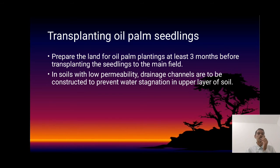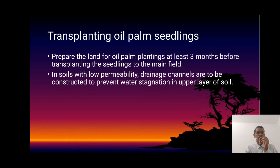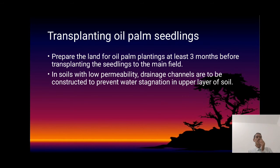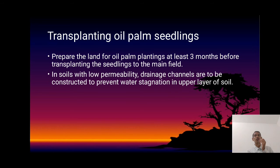The last topic is transplanting oil palm seedlings. First, prepare the land for oil palm planting at least 3 months before transplanting the seedlings to the main field. If the soil drainage is low, drainage must be controlled to prevent waterlogging in the upper layer of the soil. Transplanting needs to be done after at least 3 months of preparation before moving the seedlings to the main field or farm.